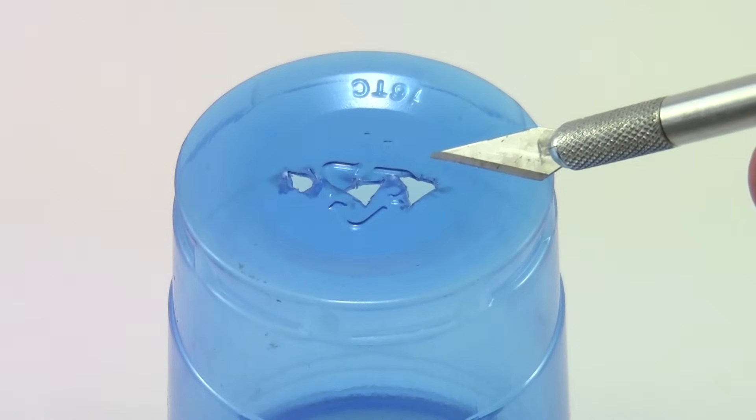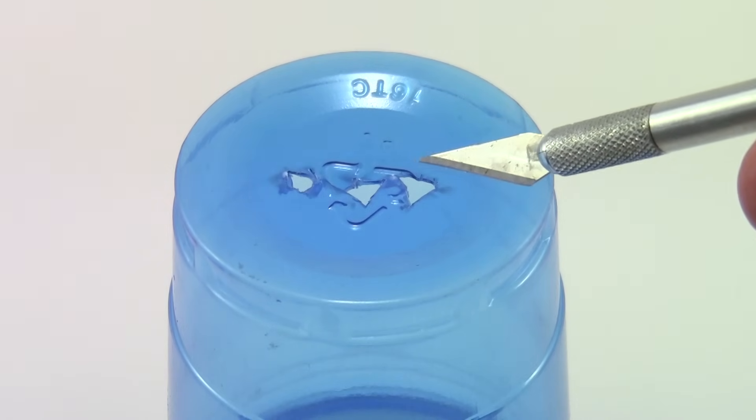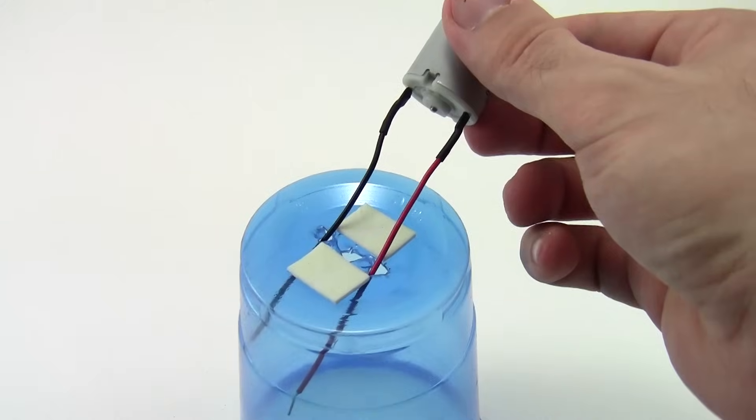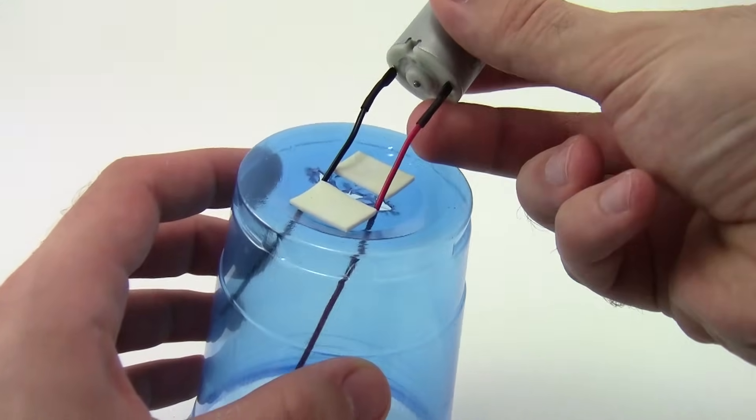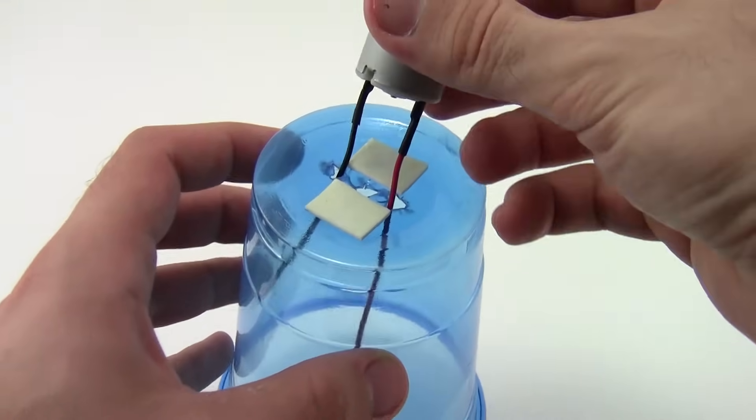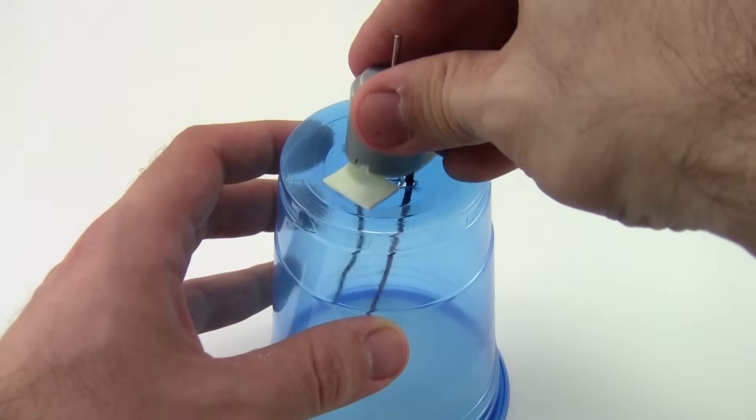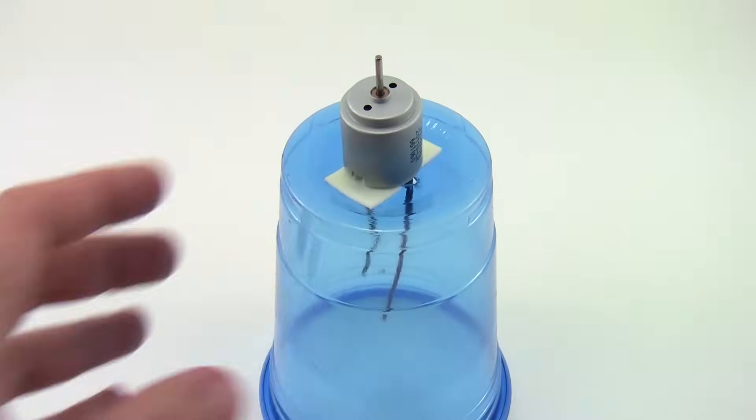To start, use a hobby knife to carefully cut three small holes in the bottom of the plastic cup. Thread the motor's wires through the two outer holes and make sure that the back of the motor's shaft will go through the center hole, then firmly press the motor onto the top of the cup using two pieces of double-sided foam tape.